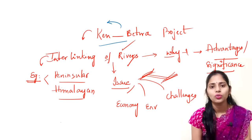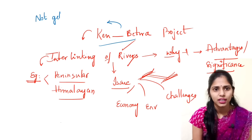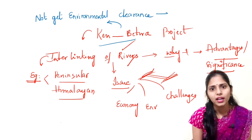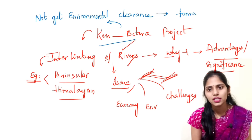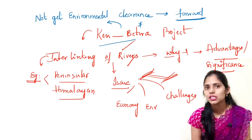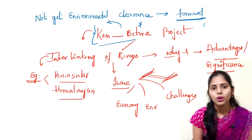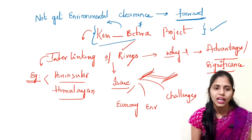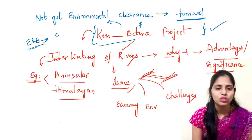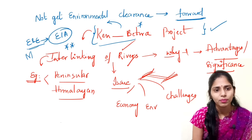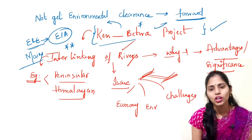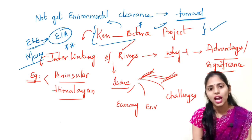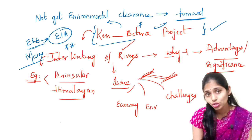The Ken Betwa project has not gotten environmental clearance but the project is progressing. From this point of view you have to see what this project is about, its advantages, the issues going on, and from environment and ecology point of view you have to see the environment impact assessment — a very important topic for your mains. From geography, you have to see which rivers Ken and Betwa are, where they are flowing, which states they pass through, and the issues of interlinking.